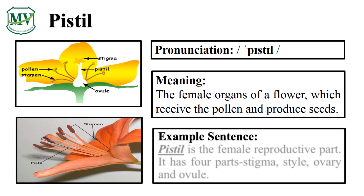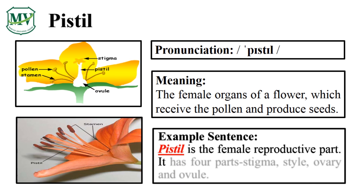That was awesome! Can you say the word by yourself? Fantastic! Pistil is the female reproductive part. It has four parts: stigma, style, ovary, and ovule. Can you read the sentence on your own?